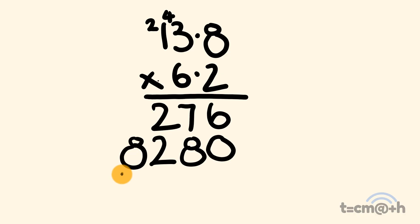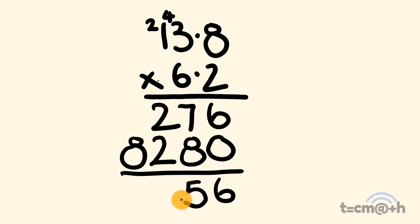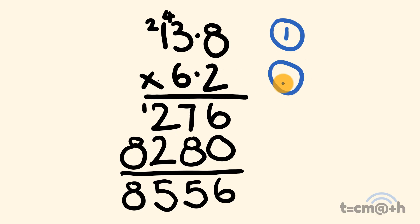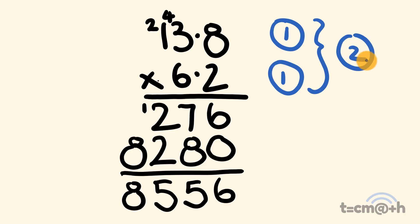Now let's go through and add these up. 6 plus 0 is equal to 6. 7 plus 8 is equal to 15 — put the 5 there, carry the 1. 2 plus 2 is equal to 4, plus 1 is equal to 5. And the 8 just goes by there by itself. So in 13.8 we have 1 number to the right of the decimal place, and for 6.2 we also have 1. So 1 plus 1 is equal to 2 — our answer will have 2 numbers to the right of the decimal place. Counting in from the right: 1, 2. Our answer is 85.56.